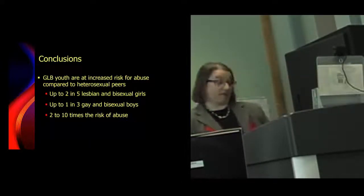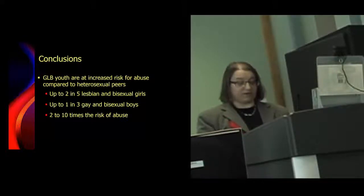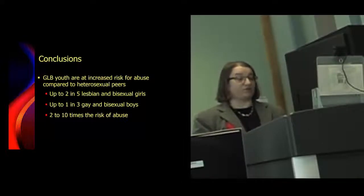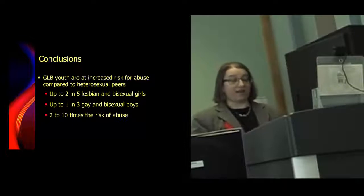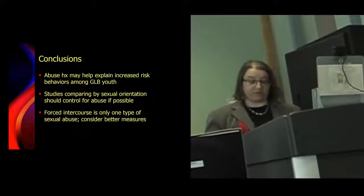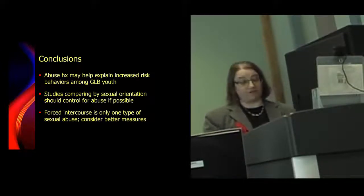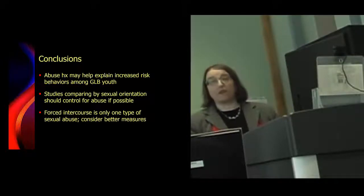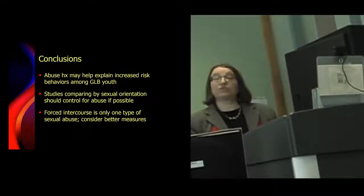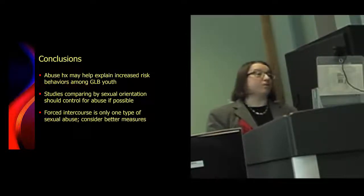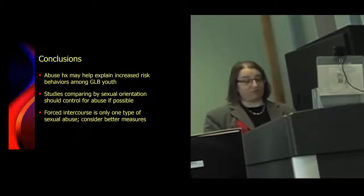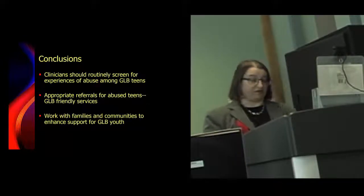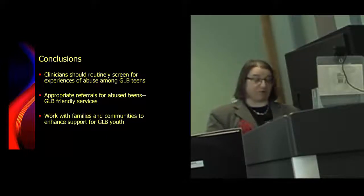Our conclusions are sobering. There appears to be a distinct hazard of abuse for sexual minority youth compared to heterosexual teens — up to 40 percent of lesbian and bi girls and a third of gay and bi boys report abuse experiences, twice to ten times the risk that heterosexual teens of the same age report. This increased risk for abuse may help explain those higher levels of risk behaviors reported among LGB youth. Studies which compare risk behaviors by orientation should probably control for sexual or physical abuse whenever possible. It's important for adolescent health surveys to include a measure of sexual victimization, but researchers should be aware that forced intercourse is a limited measure, and we must advocate for better measures of sexual abuse in school-based health surveys. While healthcare providers should routinely screen for abuse among all their patients, this is even more important for LGB youth, and we must be able to provide appropriate therapy or referrals.